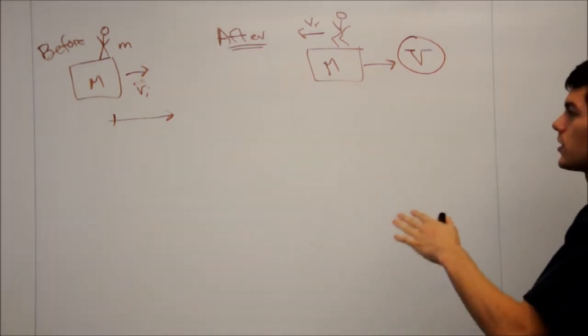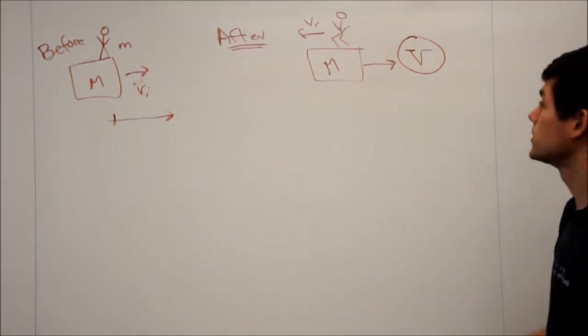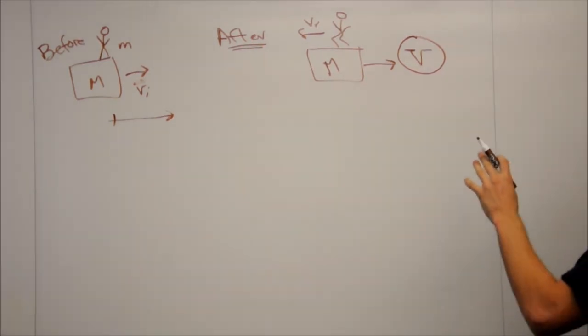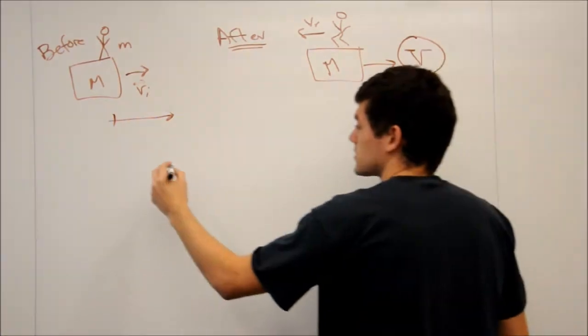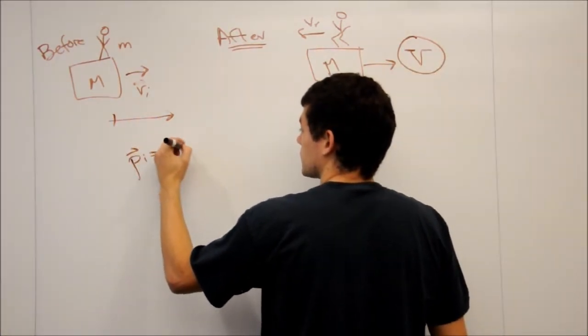The first thing that it's important to note is that the man and the block form an isolated system. So there are no net external forces acting upon the man-block system, which means that we can say that momentum is conserved and that PI equals PF.